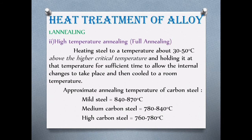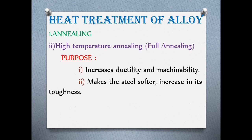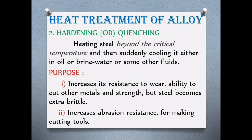For high-temperature annealing, the steel is heated 30 to 50 degrees Celsius above the critical temperature, then allowed to cool to room temperature. Annealing temperatures for different carbon steels: mild steel is 840–870°C, medium carbon steel is 782–840°C, and high carbon steel is 760–780°C. The purpose is to increase ductility and machinability, and to soften the steel while increasing toughness.